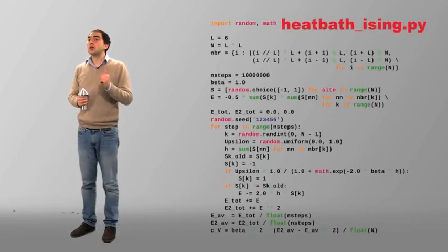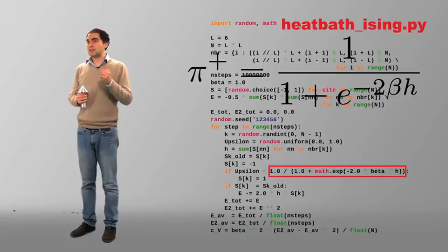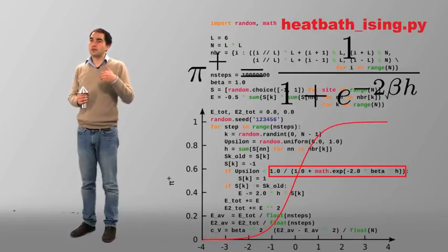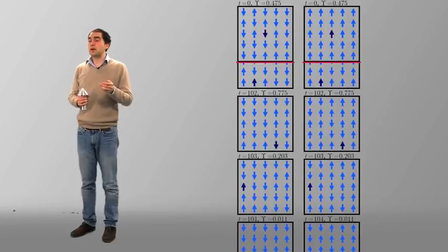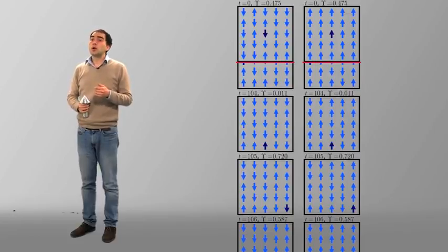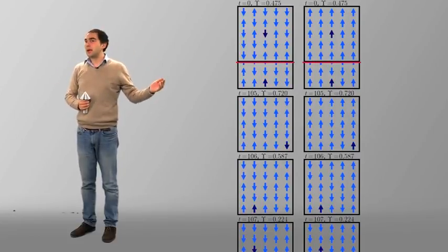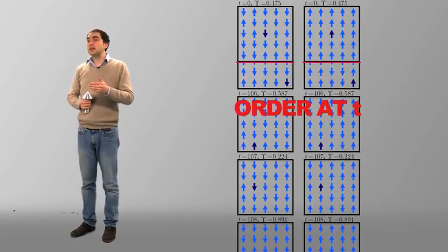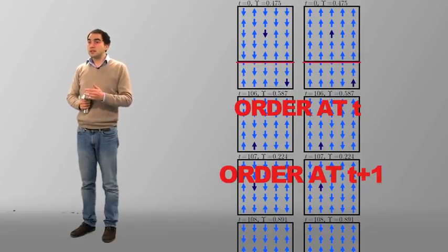Let us go back to the program heatbath_ising.py. We see that the function p plus h is an increasing function of h. This means that if we update up the spin on the left, we also update up the spin on the right. The order at time t is conserved at time t plus one. This means that the left configuration remains smaller than the right configuration at all time up to the time of the coupling.